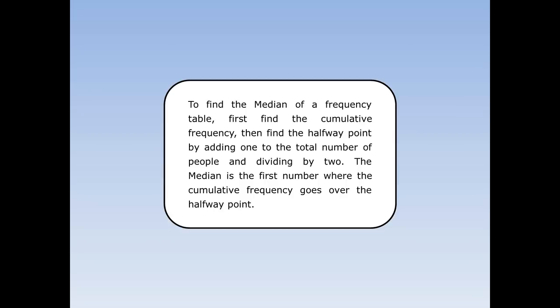To find the median of a frequency table: first find the cumulative frequency, then find the halfway point by adding 1 to the total number of people and dividing by 2. The median is the first number where the cumulative frequency goes over the halfway point.